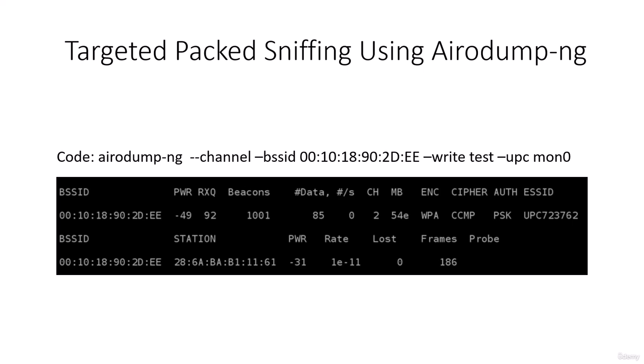The output has two sections. The first section contains all the access points within our Wi-Fi range. The second section contains all the clients associated with those access points. This entry is not a network — it's a client connected to the network. We know that because the BSSID column shows the MAC address of the network that the client is connected to, matching the access point's MAC address above.